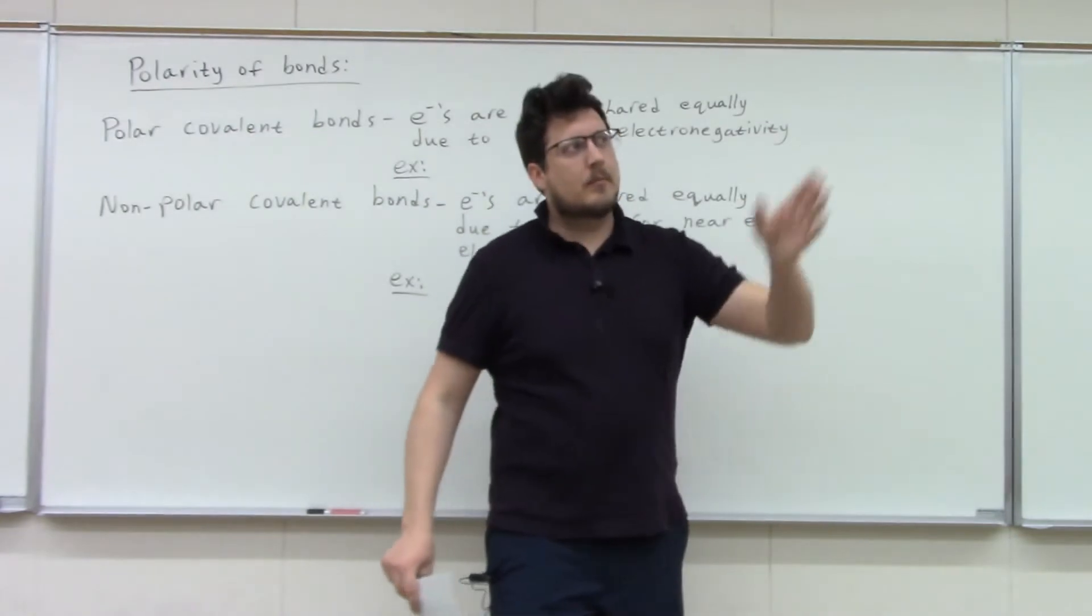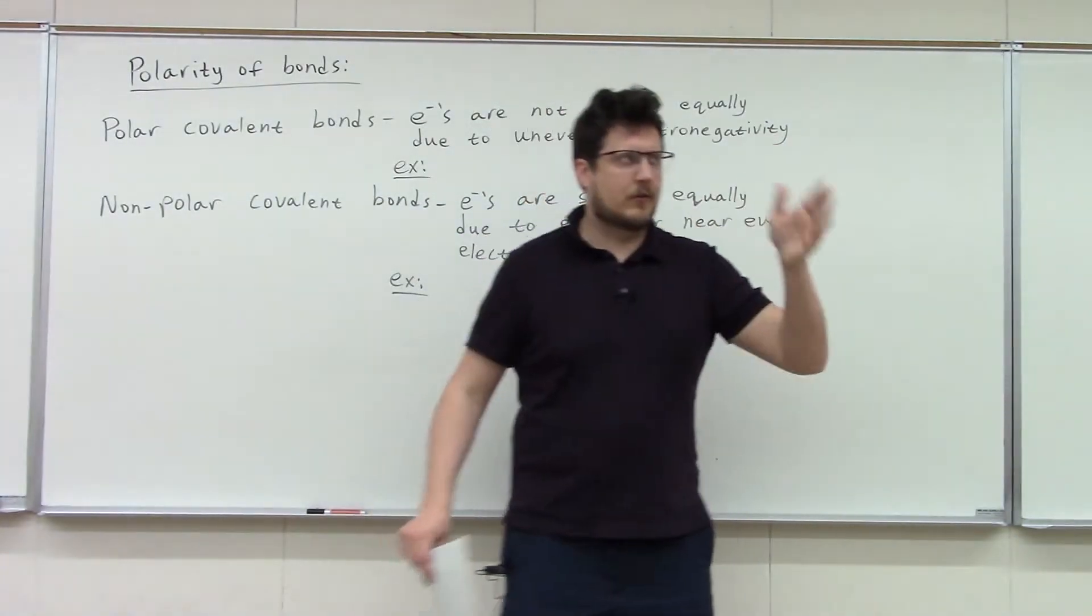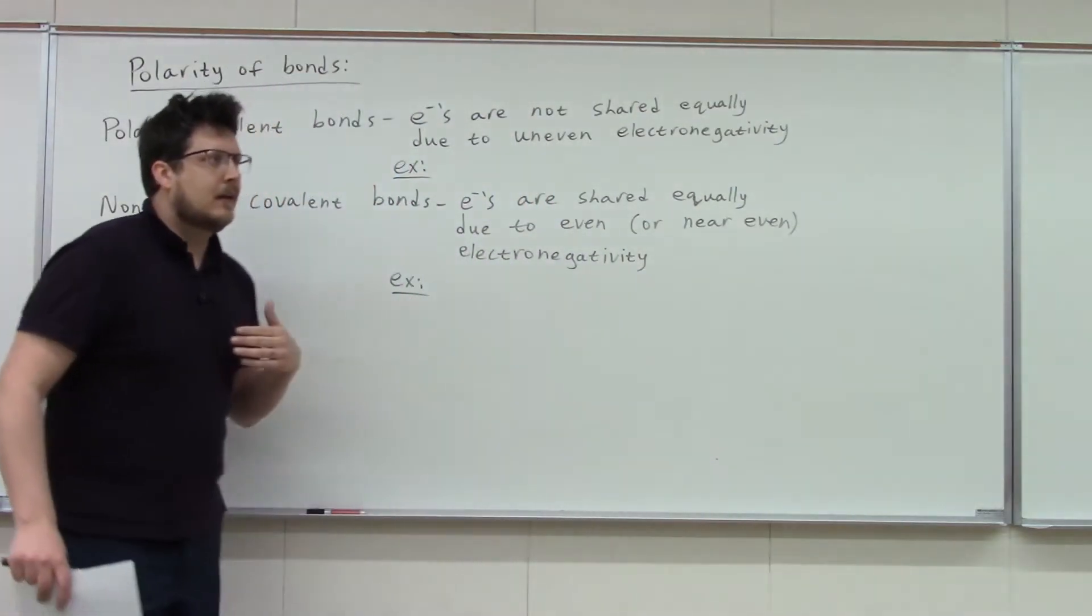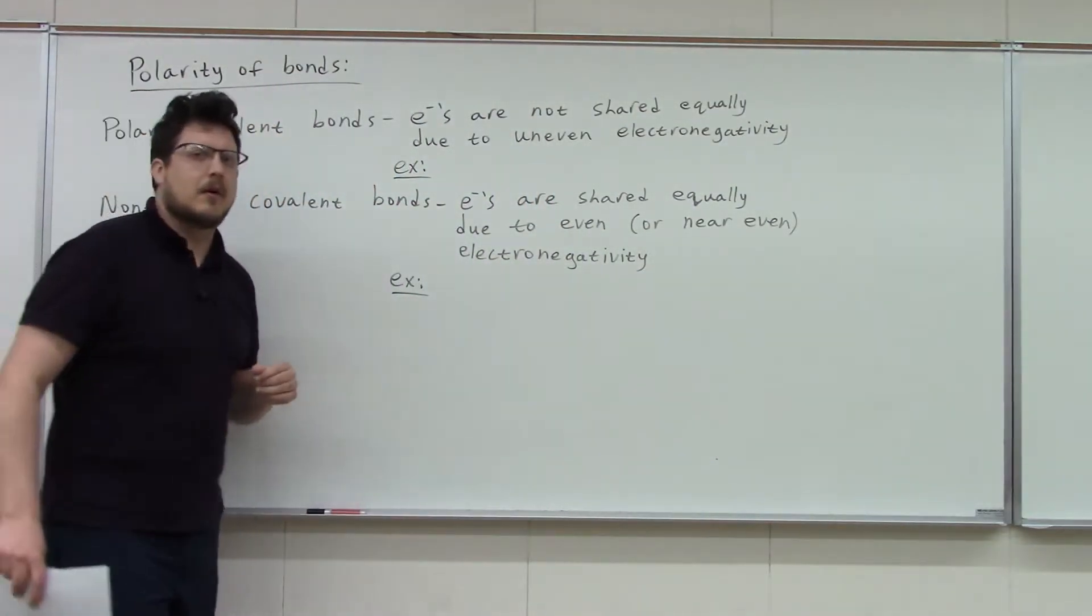And so if you remember the general trends, as you go to the right and up, you become more electronegative, excluding the noble gases. So fluorine would be the most electronegative element, and then the least would be francium down on the bottom left.